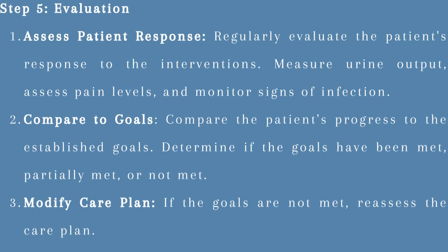Step 5: Evaluation. Regularly evaluate the patient's response to the interventions — measure urine output, assess pain levels, and monitor signs of infection. Compare the patient's progress to the established goals and determine if the goals have been met, partially met, or not met. If the goals are not met, reassess the care plan and adjust interventions, goals, or nursing diagnoses as needed based on the patient's response.